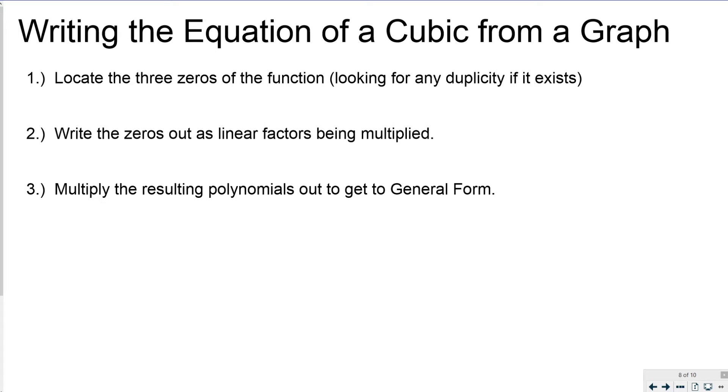So writing the equation of a cubic from a graph. The first thing that you want to do is locate the three zeros of the function, looking for any duplicity if it exists. You want to write out the zeros as linear factors being multiplied. And then we're going to practice our skill of multiplying the resulting polynomials out to get general form. So each linear factor is going to be a linear binomial.